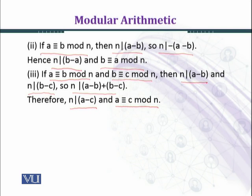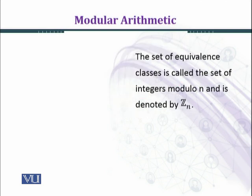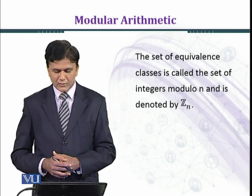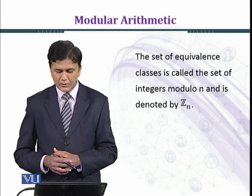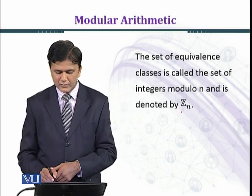Congruence relation is an equivalence relation on z. z here is the set of integers. The set of equivalence classes is called the set of integers modulo n and it is denoted by z n.